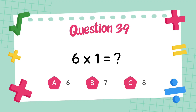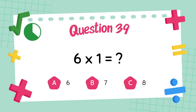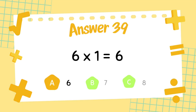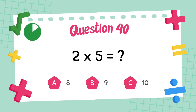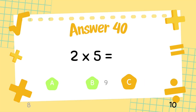What is 6 multiply 1? The answer is 6. The answer is 6. What is 2 multiply 5? The answer is 5. What is 5 multiply 5? The answer is 10.